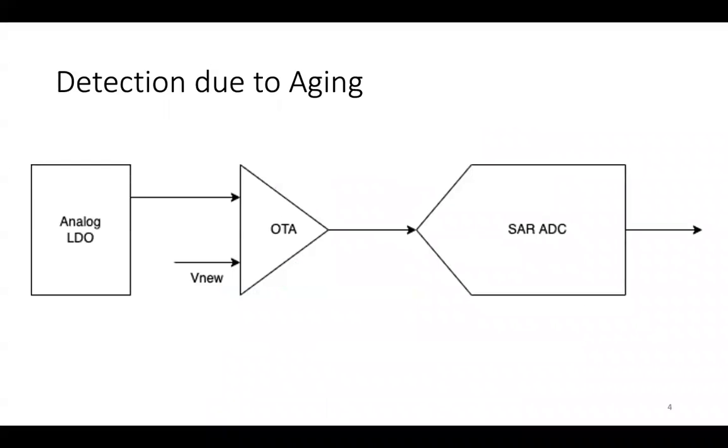Therefore, we propose an idea where we can still detect counterfeiting but on-chip instead. As analog LDO ages, its output voltage deviates from the original output value. This deviation will be amplified through the OTA. The ADC will take this amplified deviation and compare it to the un-aged OTA-analog LDO output, and we will use that to determine the age of the chip.